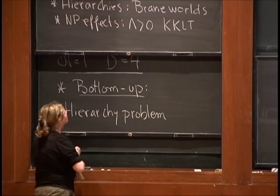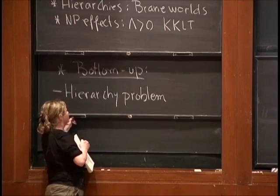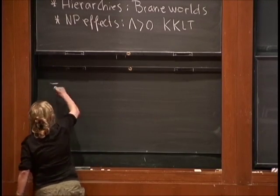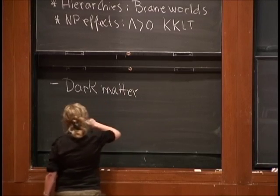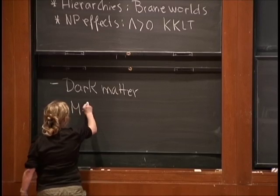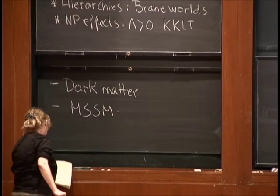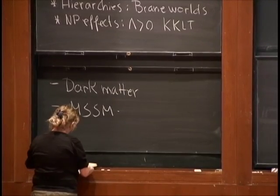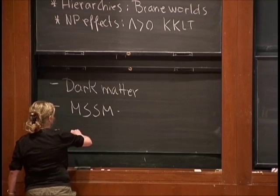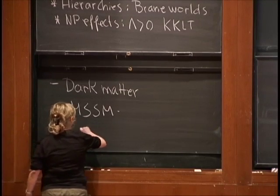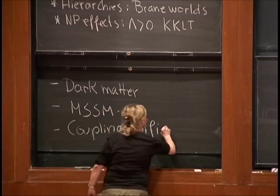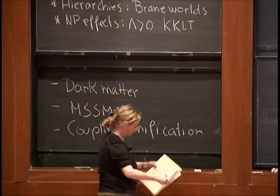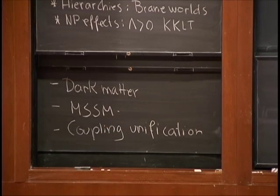Supersymmetry also provides candidates for dark matter. It provides nice extensions of the standard model where particles that we know in nature — fermions — are included. There is a generalization called the MSSM. And the last motivation I was going to mention is that it provides coupling unification for Grand Unified Theories. So these were the original motivations of why string theorists wanted to have N=1 and D=4.